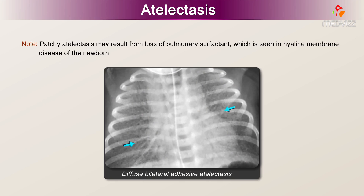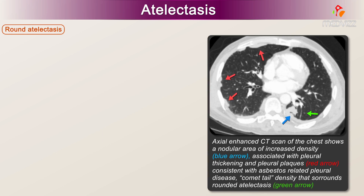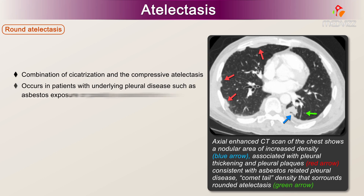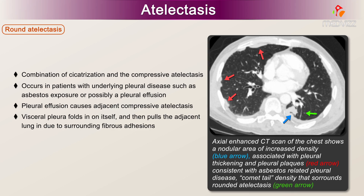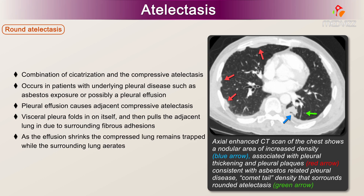Note: patchy atelectasis may result from loss of pulmonary surfactant, which is seen in hyaline membrane disease of the newborn. Another form is round atelectasis, which is a combination of cicatrization and compressive atelectasis. It usually occurs in patients with underlying pleural disease, such as asbestos exposure, or possibly a pleural effusion. Pleural effusion causes adjacent compressive atelectasis, and the visceral pleura folds in on itself and pulls the adjacent lung in due to surrounding fibrous adhesions.